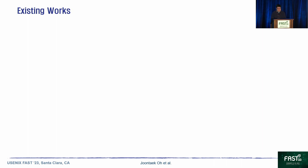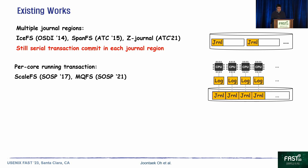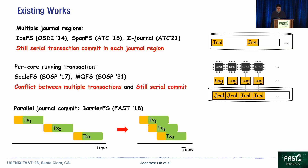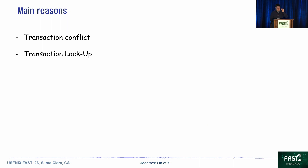Many researchers noticed the serial journal commit and proposed various types of concurrent transaction commits. ISFS, PENFS, and JET journal designed multiple journal regions; however, every transaction commit is still serialized within each journal region. ScaleFS and MQFS proposed per-core running transactions; however, conflicts can occur between multiple running transactions and it still has a serial journal commit problem. BarrierFS designed a parallel journal commit using an order-preserving block device, separating and pipelining commit work, but evaluation results show it cannot scale well. We found two main reasons: transaction conflict and transaction lockup.